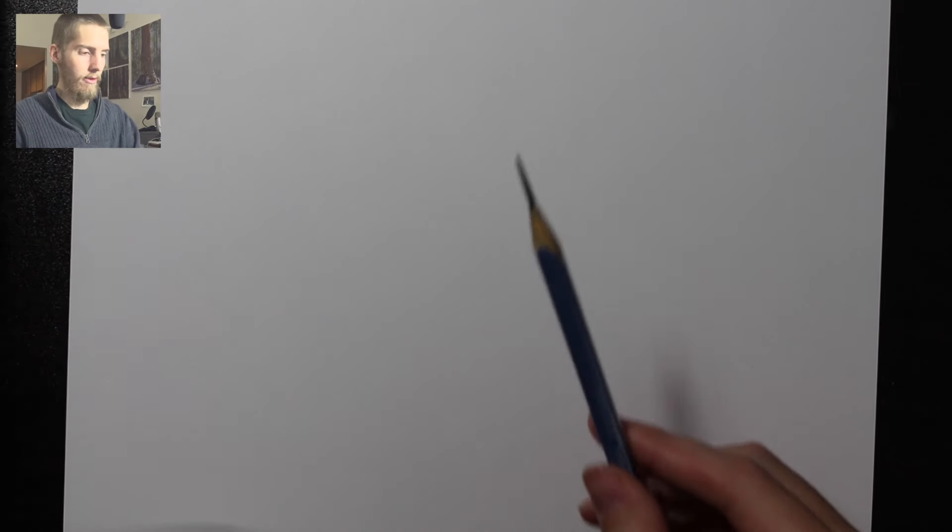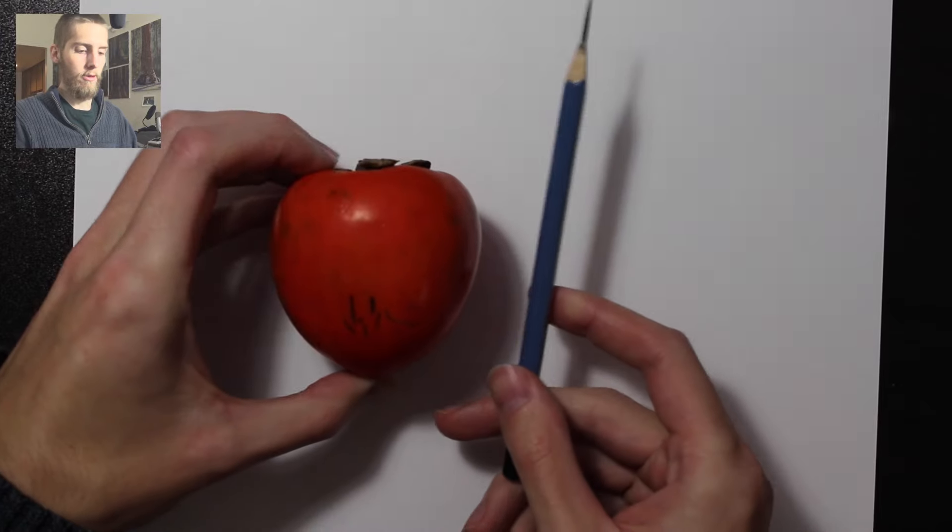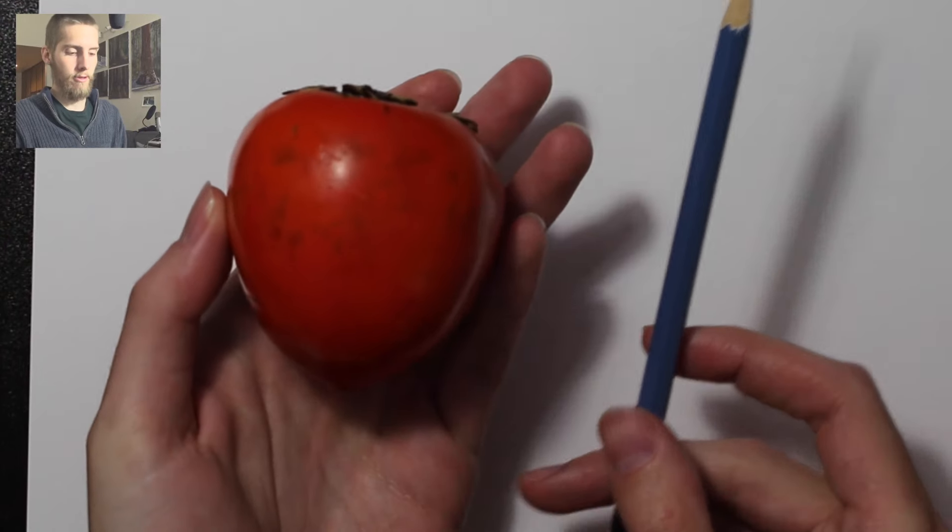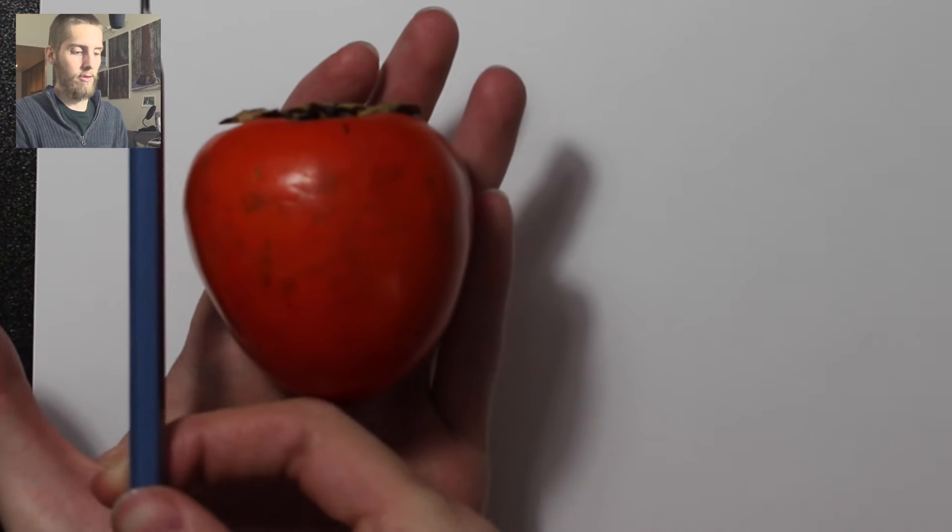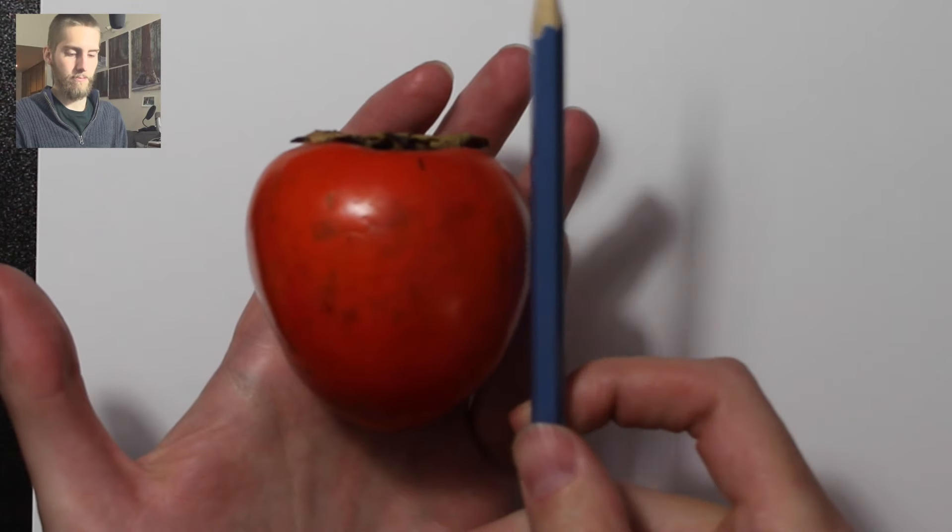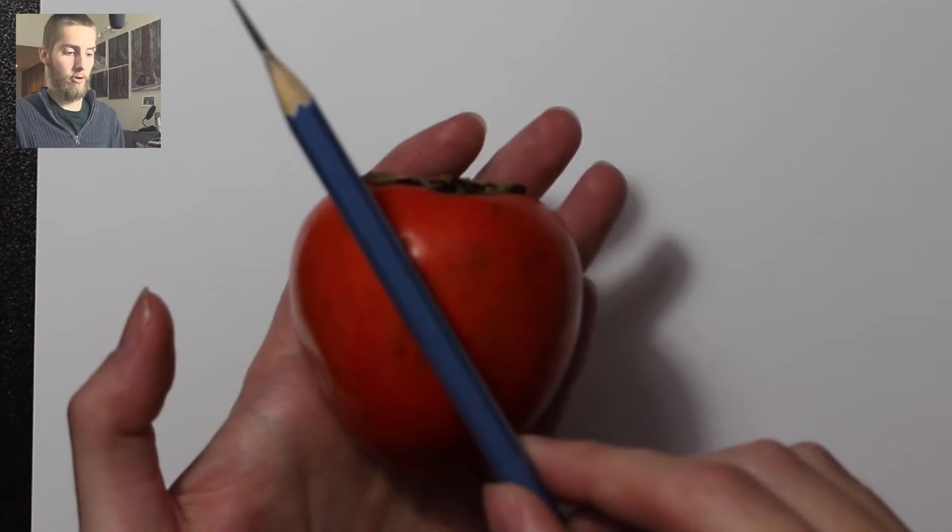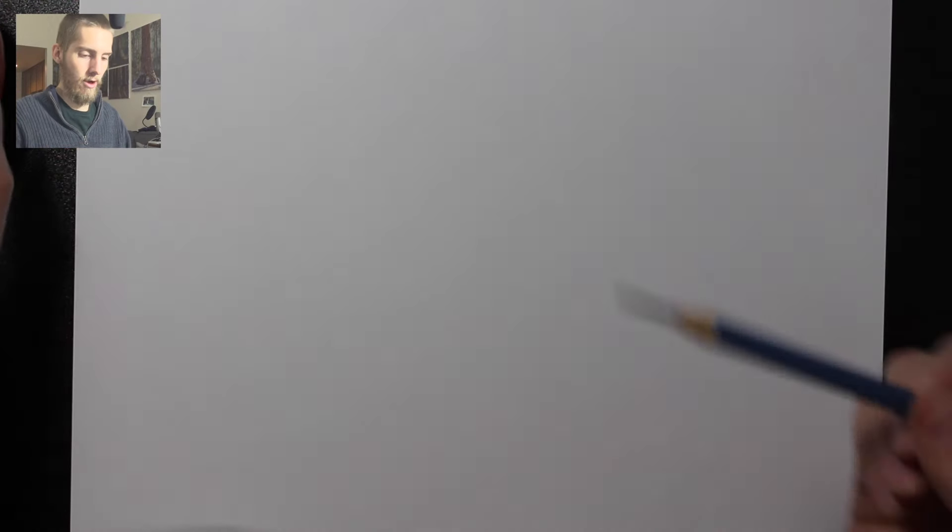So let's start out with the theory. The theory basically has to do with the diagonal around any object. Let's take this persimmon for instance and imagine there's a box around its outer limits. That creates a diagonal. Let me draw this out real quick.